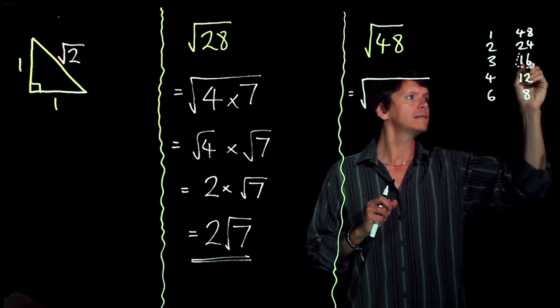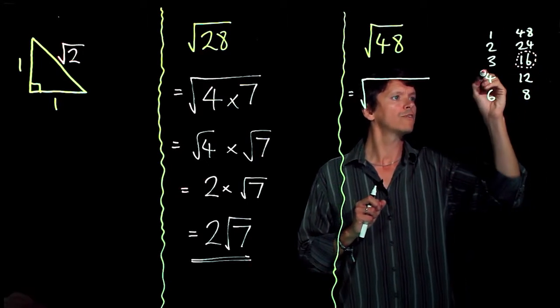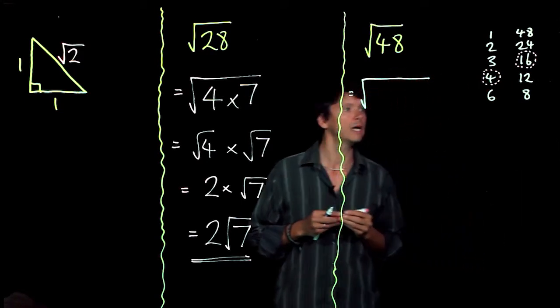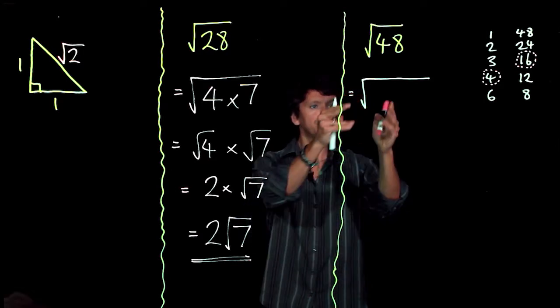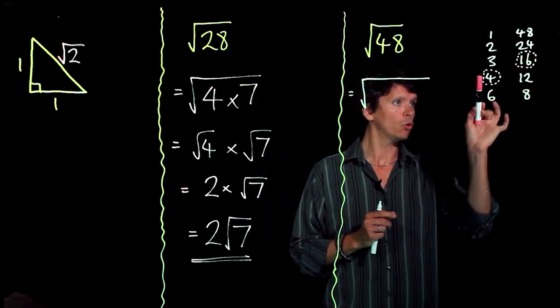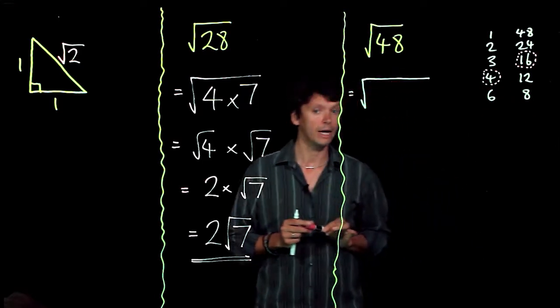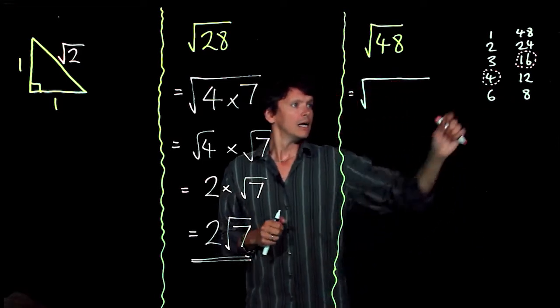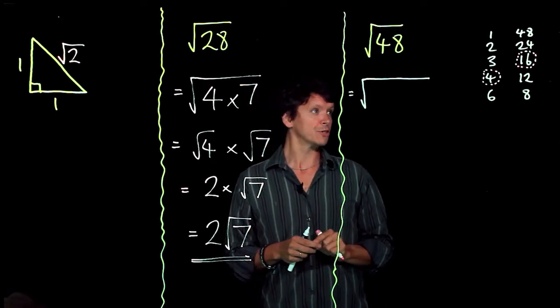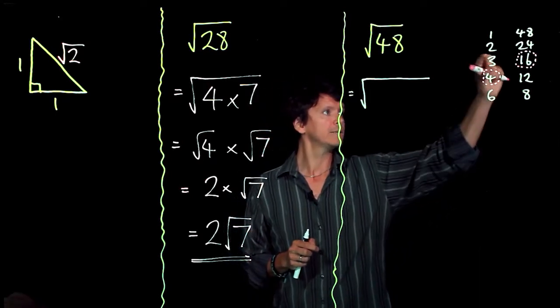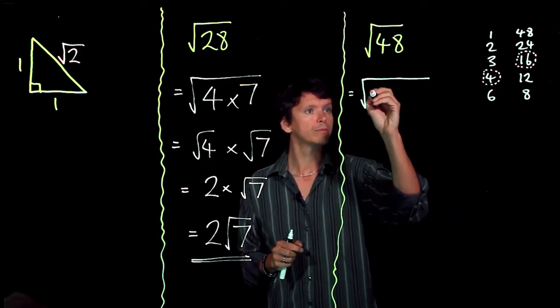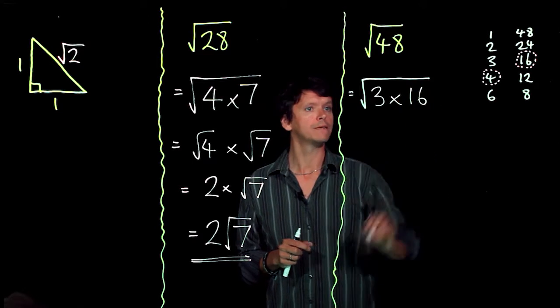So let's have a look, where are our square numbers? We've got one there, 16. And we've got one there, 4. And that's all we have. So within this square root we're either going to say it's 3 times 16 or 4 times 12. And you could do either one. Remembering that we want the smallest possible number inside the square root is going to lead me to picking 3 times by 16. We'll see why at the end.